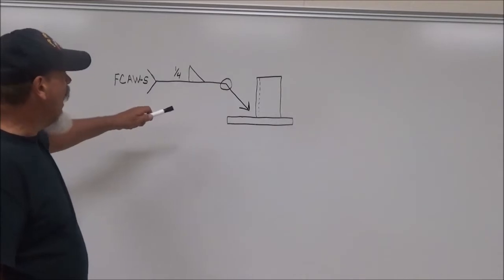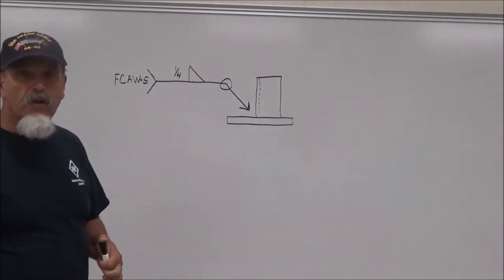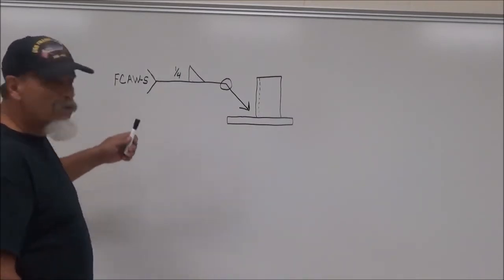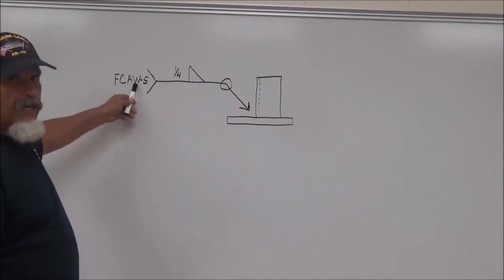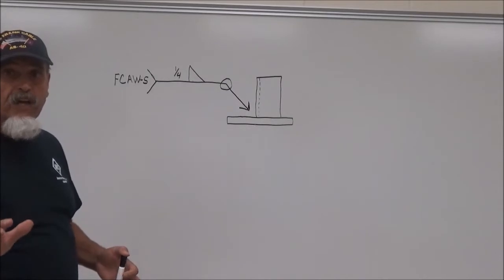This weld's to be made on the other side. But now look, we've got this little circle here. That little circle means to weld all around. Now, we look at our tail. What's the tail tell us? It's going to be flux cord arc welding using shielding. So we're going to use a shielding gas with the flux cord process.